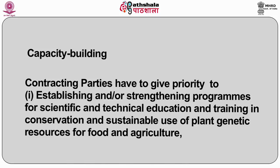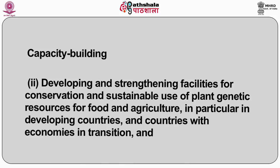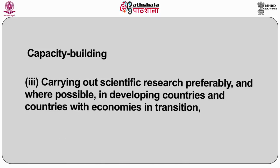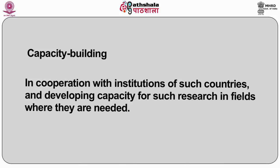Contracting parties have to give priority to establishing or strengthening programs for scientific and technical education and training in conservation and sustainable use of plant genetic resources for food and agriculture. Secondly, developing and strengthening facilities for conservation and sustainable use of plant genetic resources, in particular in developing countries and countries with economies in transition. And thirdly, carrying out scientific research, preferably and where possible in developing countries and countries with economies in transition, in cooperation with institutions of such countries and developing capacity for such research in fields where they are needed.